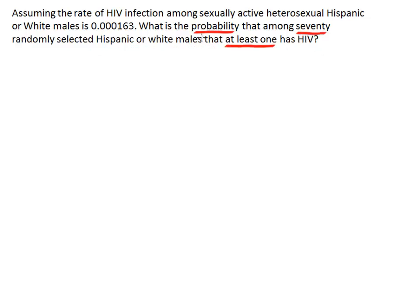I've highlighted some important phrases in the problem that will help us determine what method to use to solve the problem. Clearly, 'probability' indicates it's a probability question. The fact that we're selecting 70 different individuals means we'll be using the multiplication rule at some point. And then we have the phrase 'at least one,' which indicates a particular technique that will make the problem much more manageable.